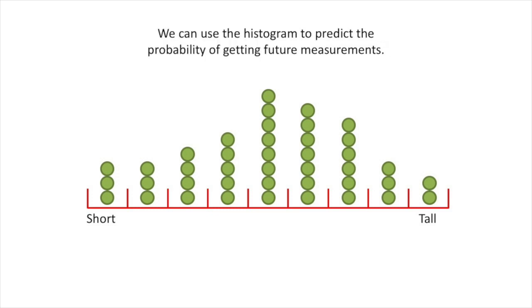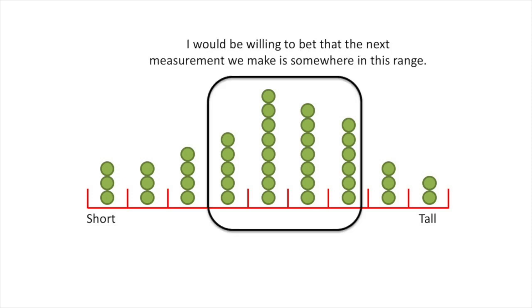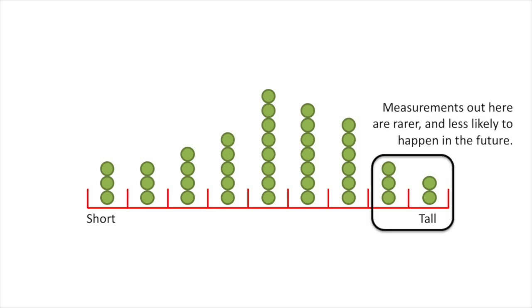We can use the histogram to predict the probability of getting future measurements. I would be willing to bet that the next measurement we make is somewhere in this range. Measurements out here are rarer and less likely to happen in the future.